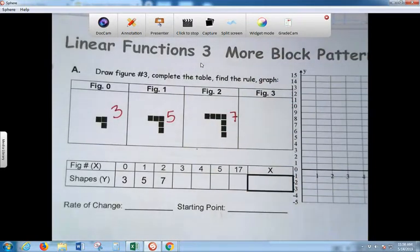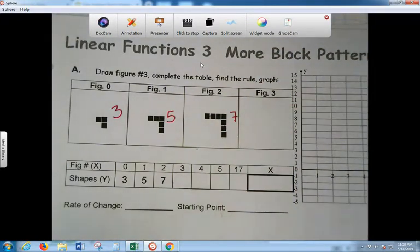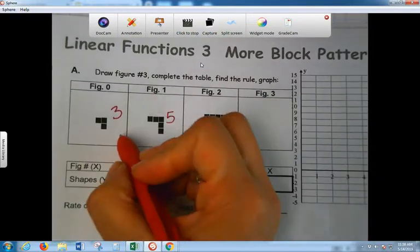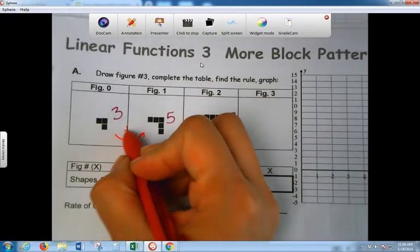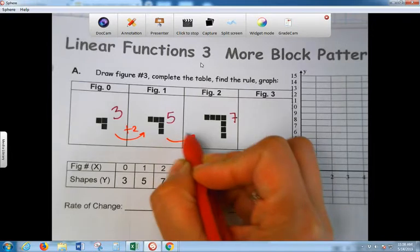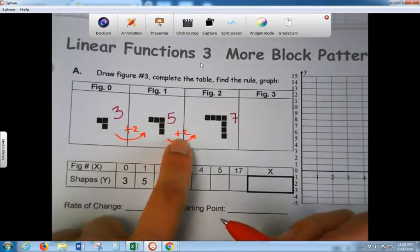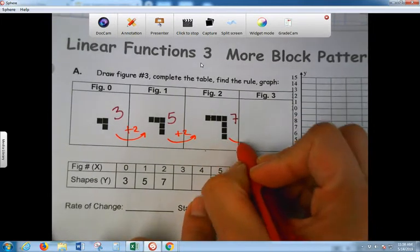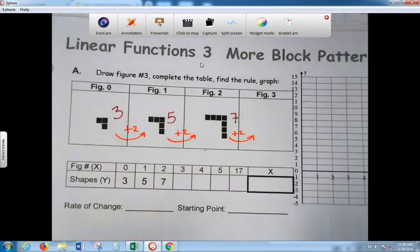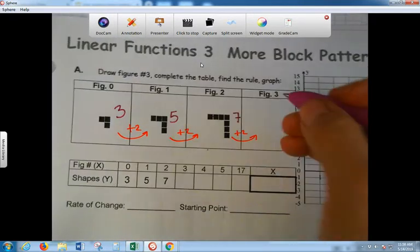0, 2. Yep. So we're adding 2, right? 3 plus 2, 5. 5 plus 2, 7. So if I add 2 more, how many will be in figure 3? 9. Good, 9. We can just write down 9.